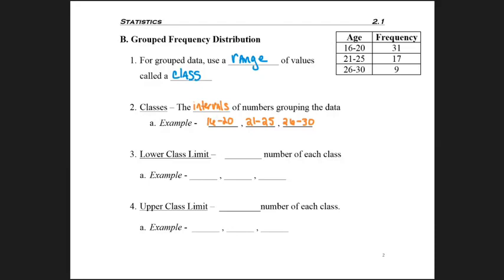The first is the class lower limit, which is just the smallest number of each class. So for this table, it would be 16, 21, and 26.